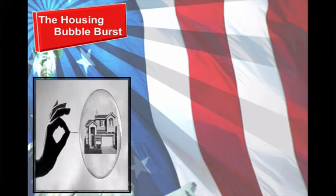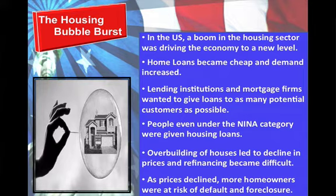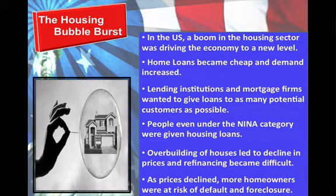The housing bubble burst: in the US, a boom in the housing sector was driving the economy to a new level in the mid-2000s. Home loans became cheap and demand for homes increased. Lending institutions and mortgage firms wanted to give loans to as many customers as possible. People who are under the no income and no asset category were even given housing loans, which wasn't typical. This led to the overbuilding of houses, a decline in prices, and refinancing homes became difficult. More homeowners were at risk of default and foreclosure, and because many buyers did not have good credit or the money to repay the loans, the bubble burst.